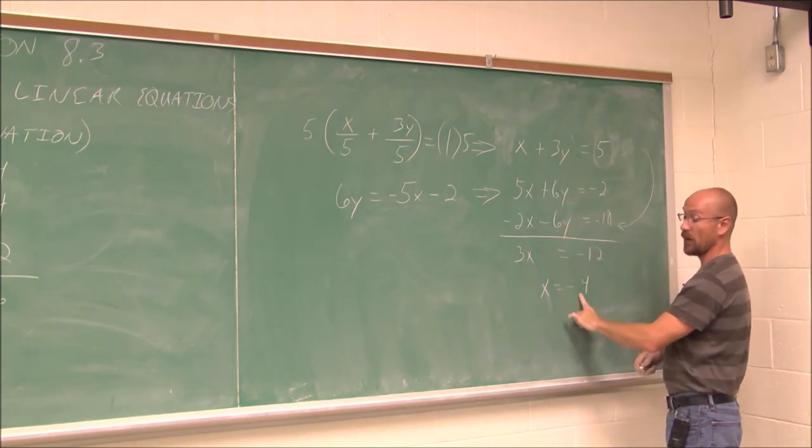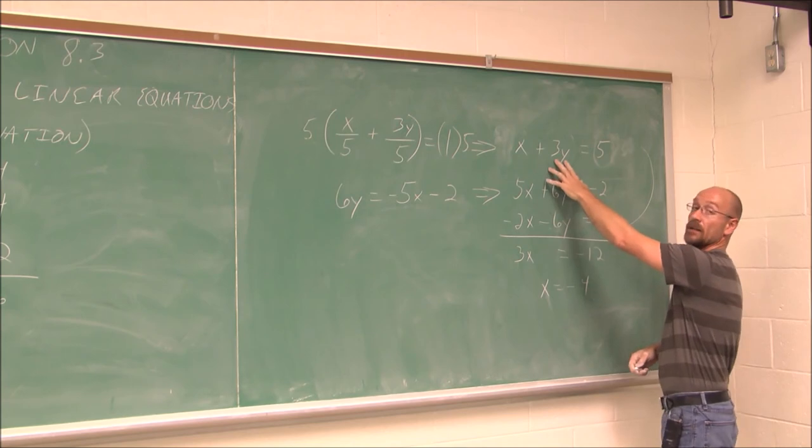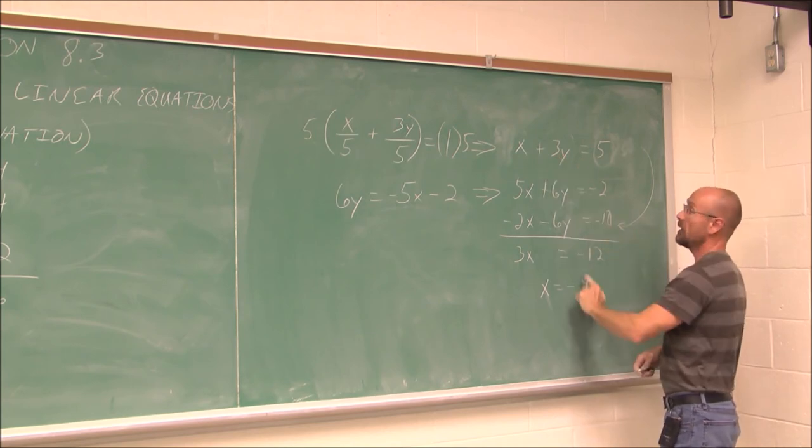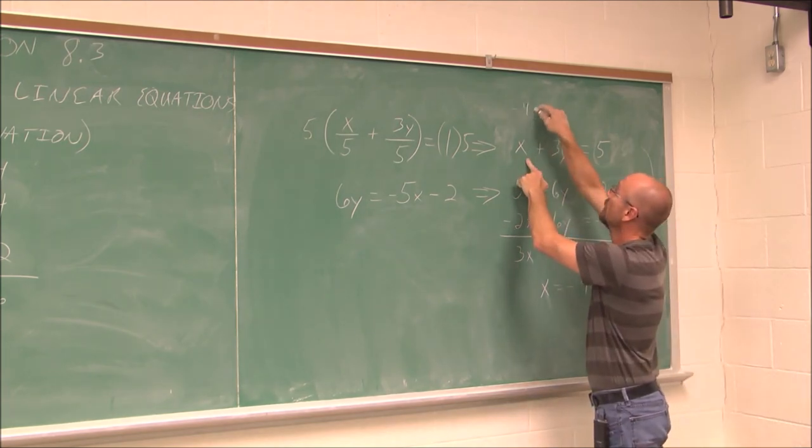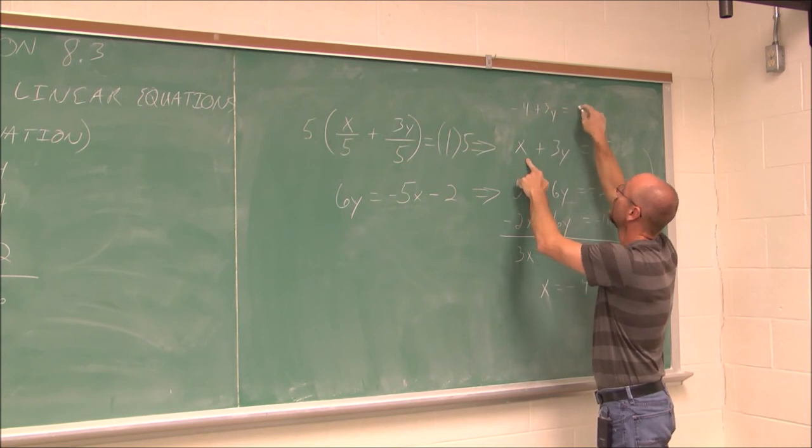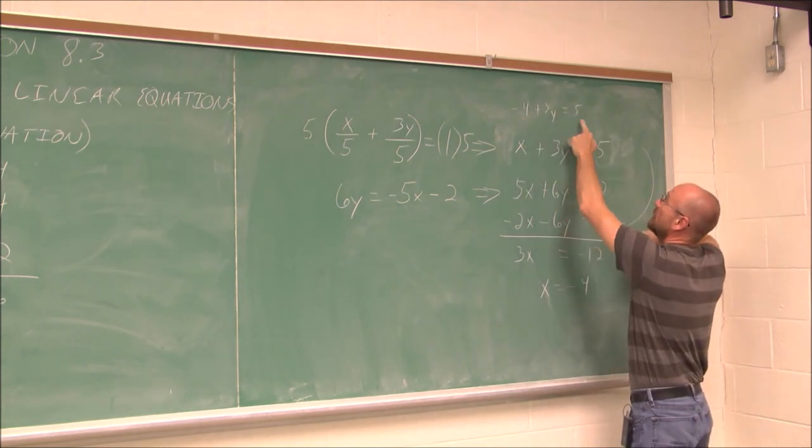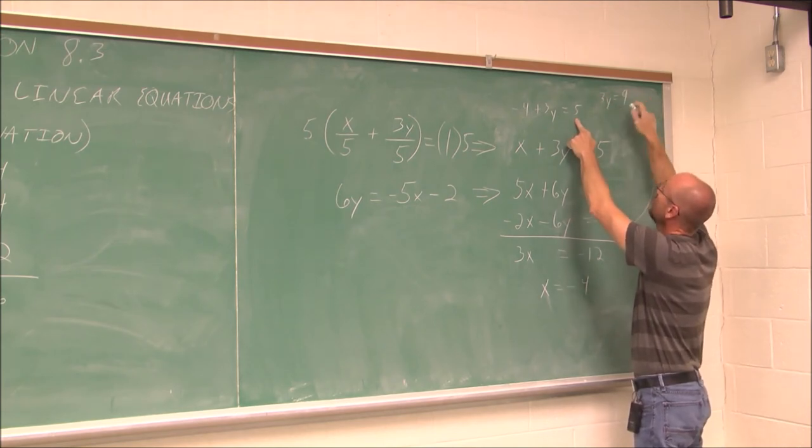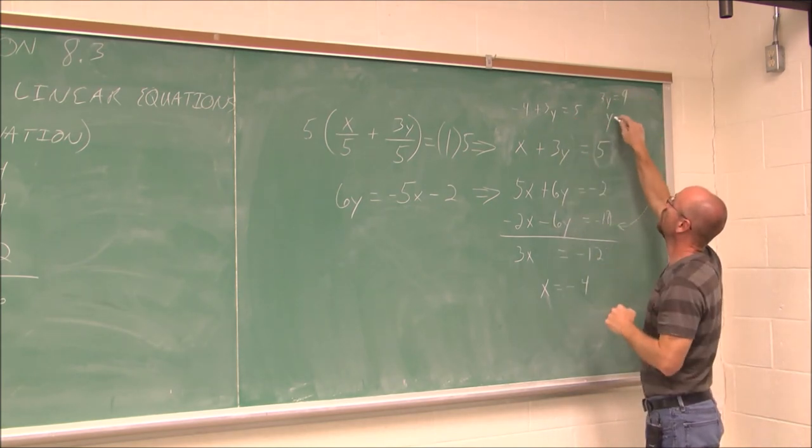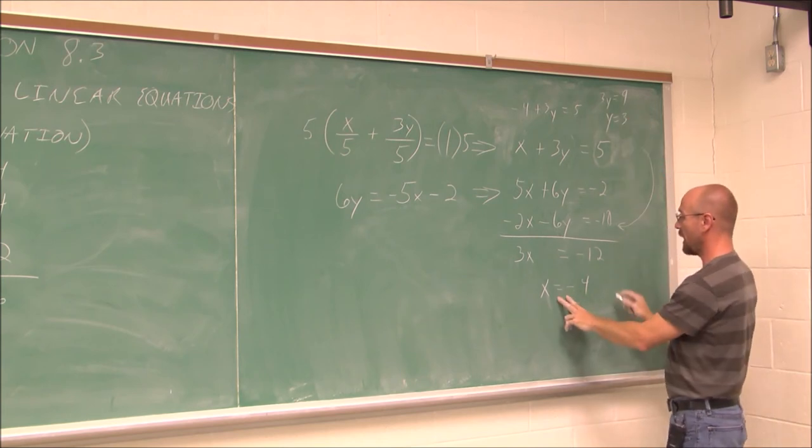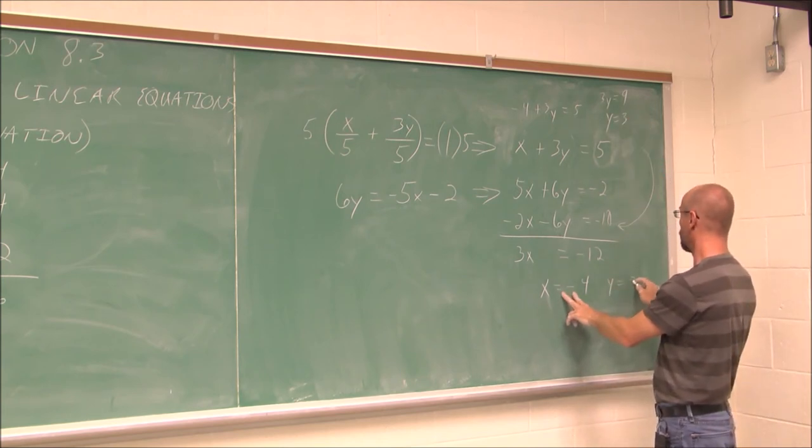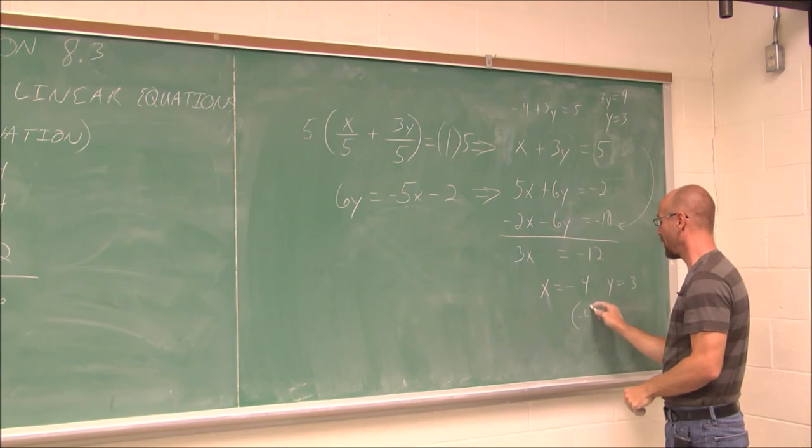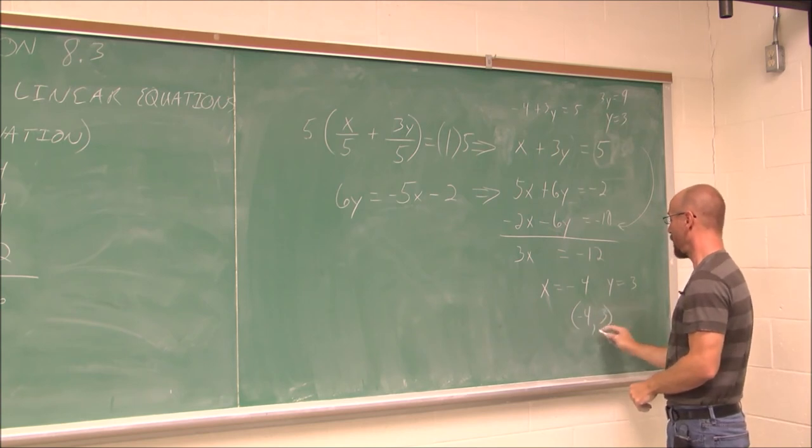If I look at these two equations, if I know what x is, I can find out what y is. I'm just going to plug it into this one. If x is negative 4, I can add 4 to both sides. So I get 3y equals 5 plus 4, which is 9. Divide by 3, y equals 3. So when x is negative 4, y equals 3. That's the ordered pair (negative 4, positive 3).